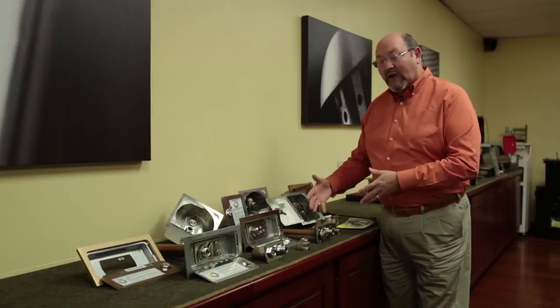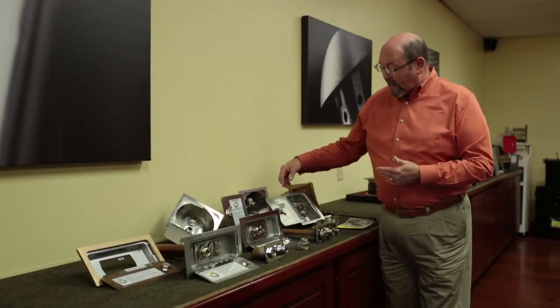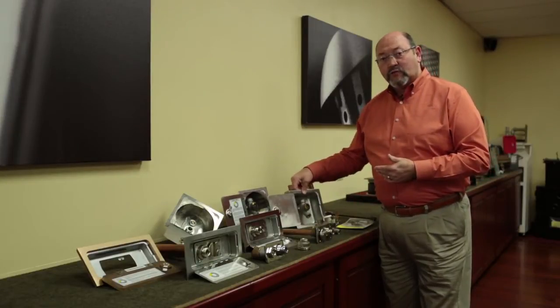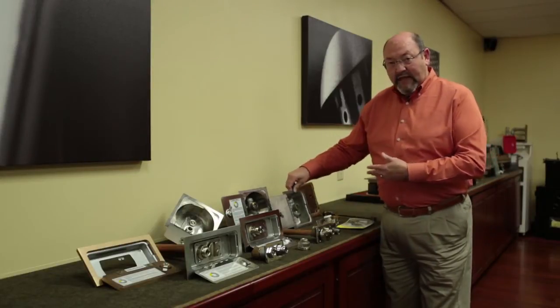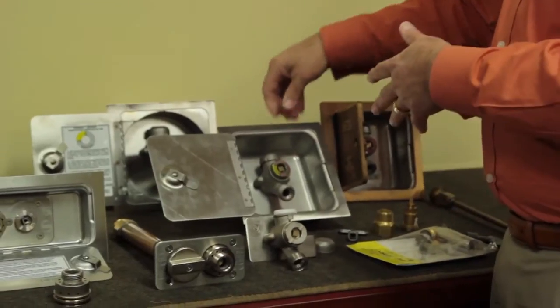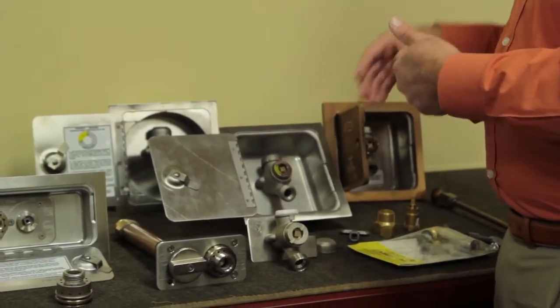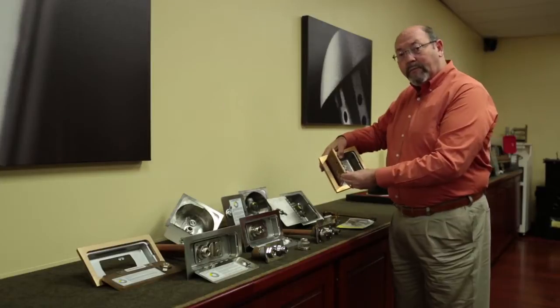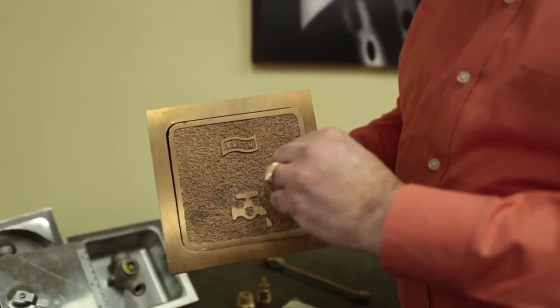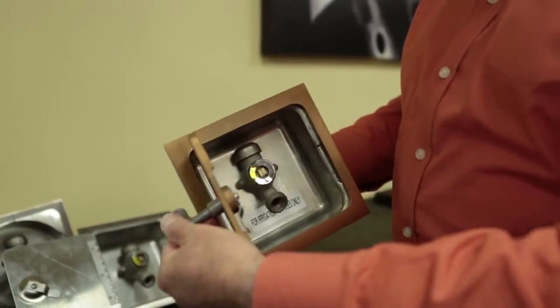Now if you want a more flush application, then you can get the hydrant with a stainless steel box, which recesses the hydrant into the wall. The standard box is stainless steel, but we also offer an optional nickel bronze or polished bronze, as shown here, veneers that fit onto the stainless steel box.